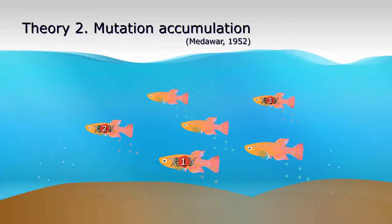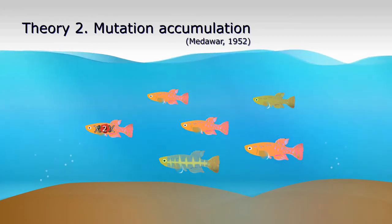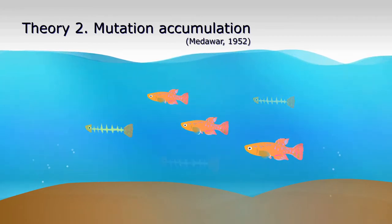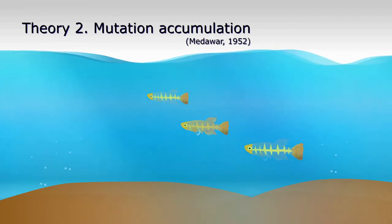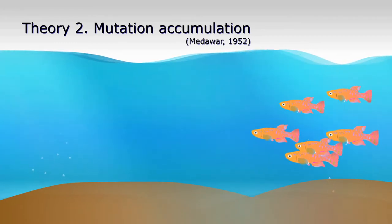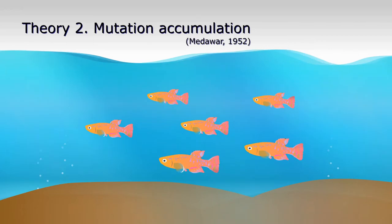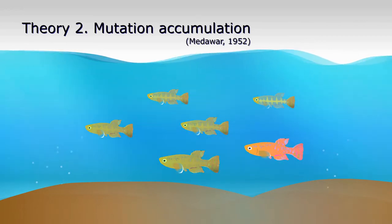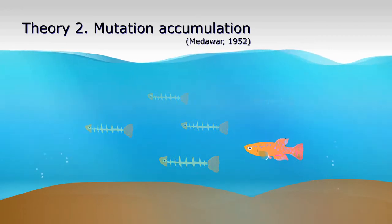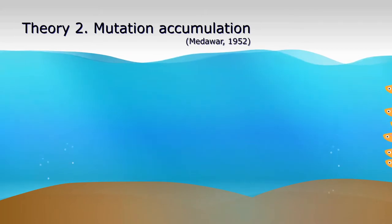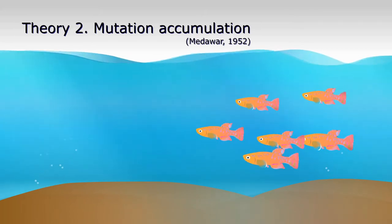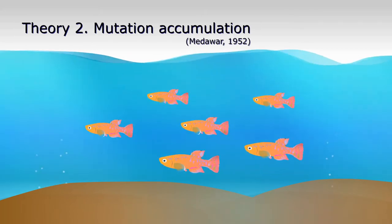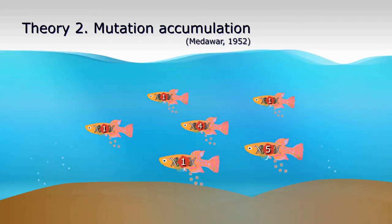Hypothesis two maintains that mutations causing aging emerge in populations because they are virtually invisible to selection. If a mutant gene only harms organisms after they have already reproduced, it will very likely not be efficiently removed by selection. Over many generations, it is possible for these mutant genes to become rather frequent in the whole population and together cause aging.